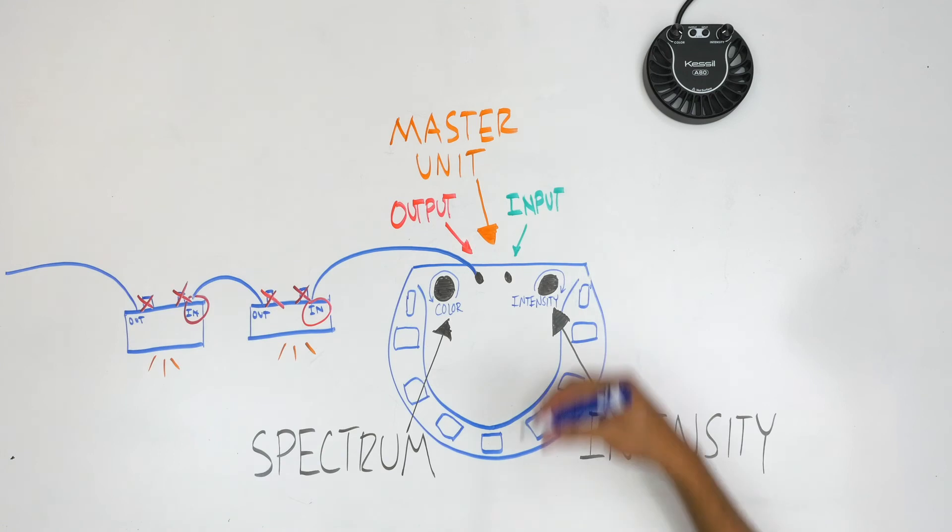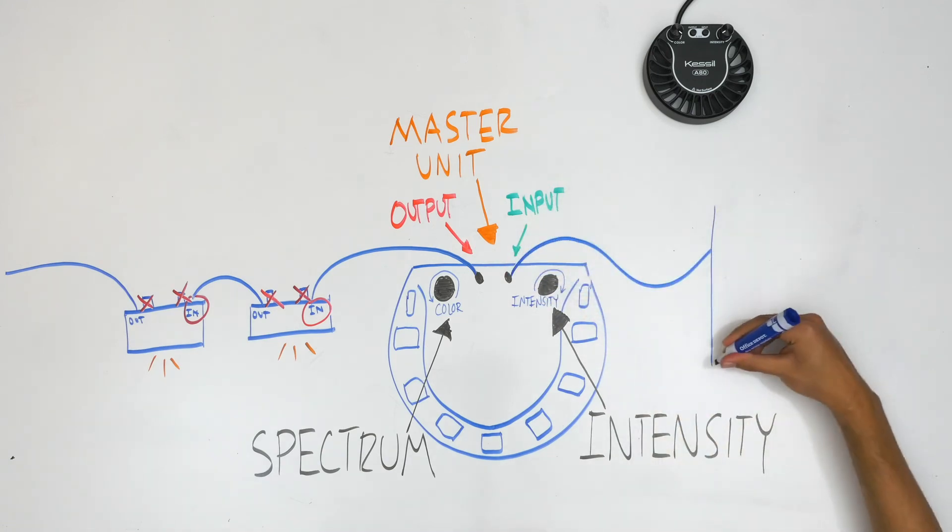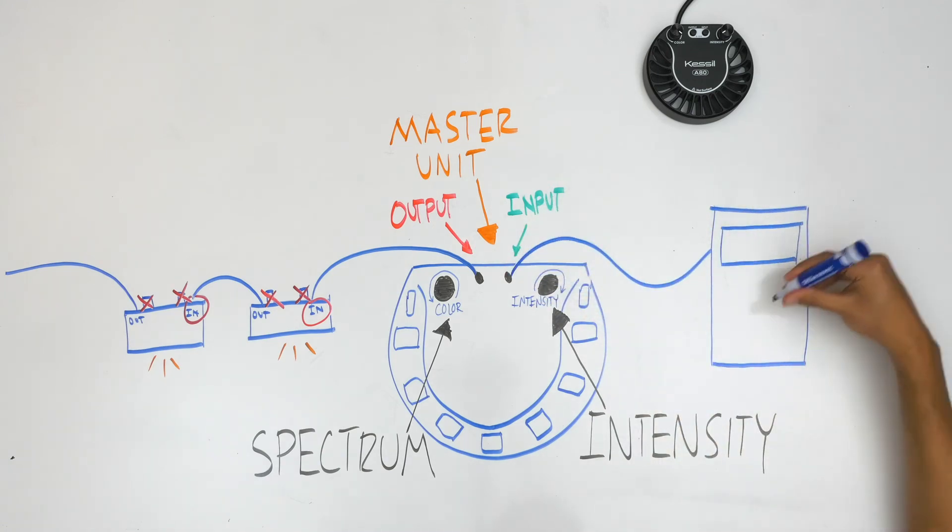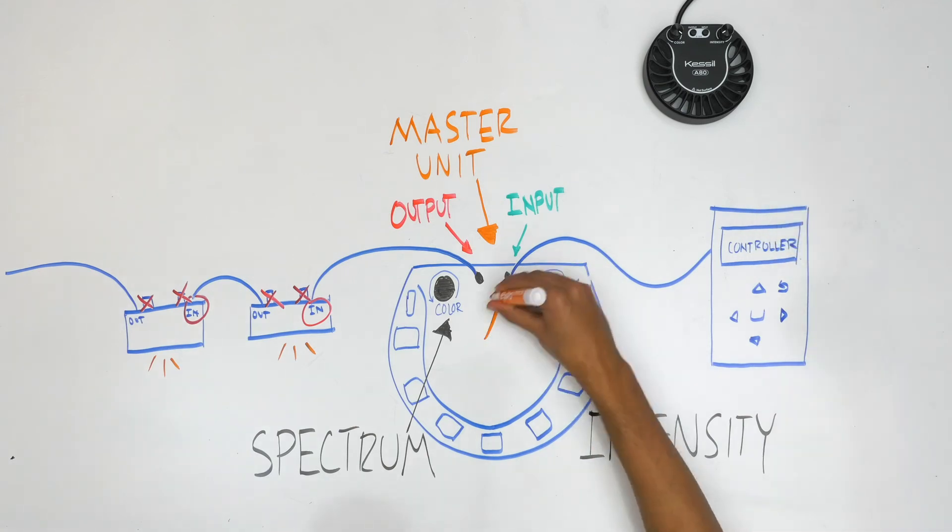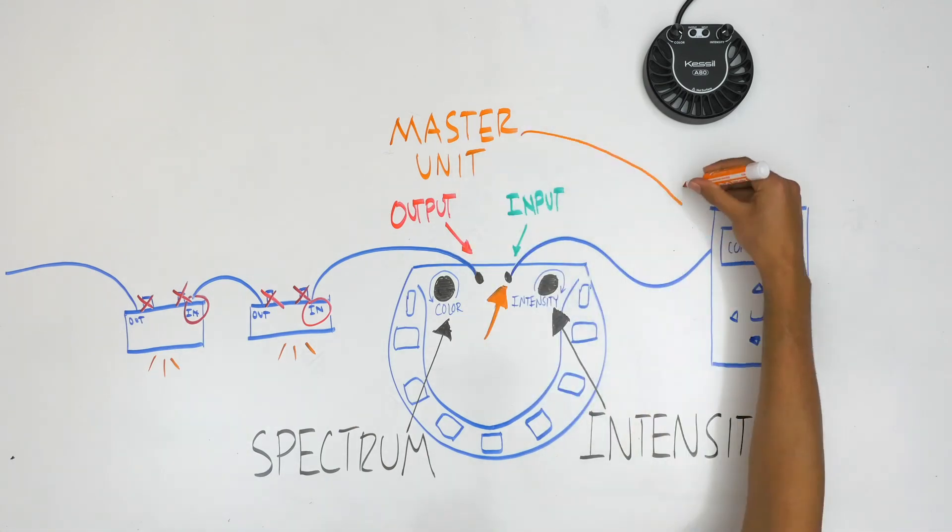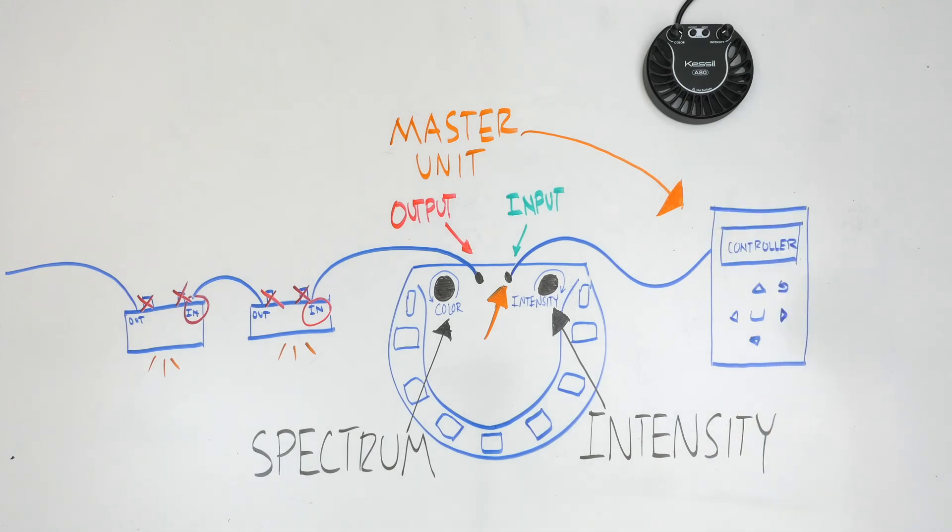They are also compatible with Kessel or third party external controllers, which also connect to the input jack. You can use these to set custom color and intensity settings, as well as set timed light schedules. Once an external controller is plugged into a Kessel light, the controller now becomes the master unit.